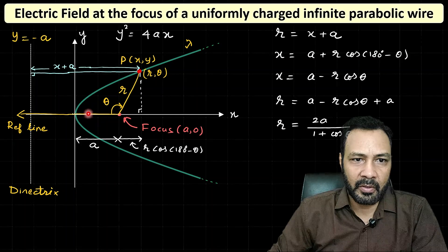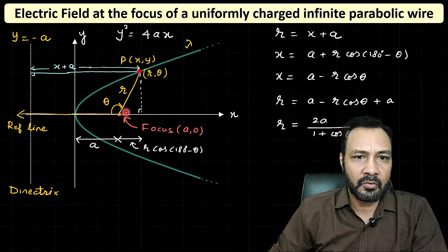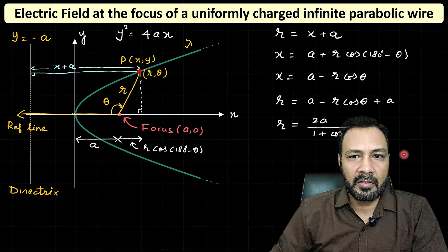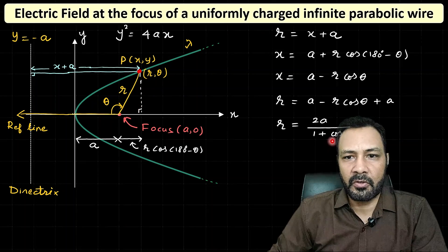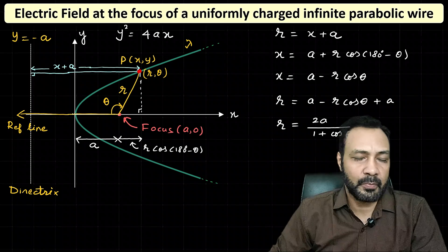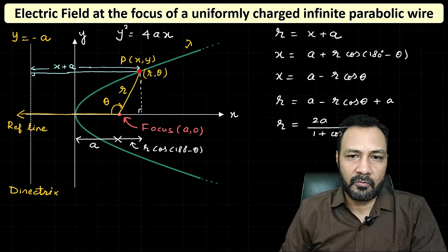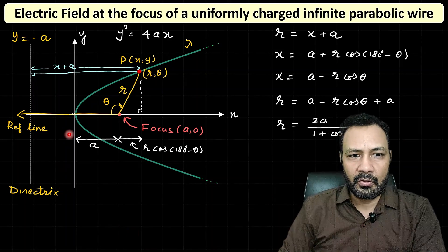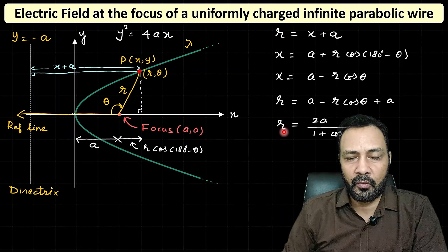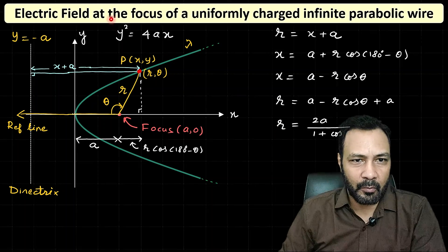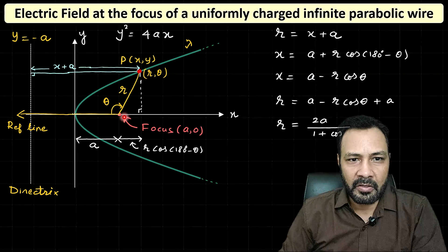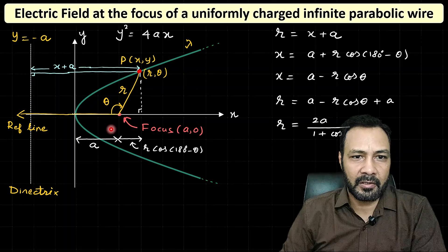We can verify: at θ = 0, cosθ = 1, so r = 2a/2 = a — that is the vertex point. As θ → π, cos π = −1, so r = 2a/0 → ∞. This confirms the polar equation r = 2a/(1 + cosθ) correctly describes the parabola.